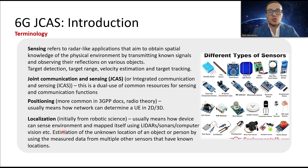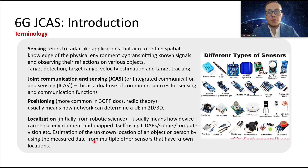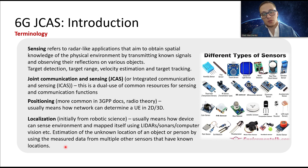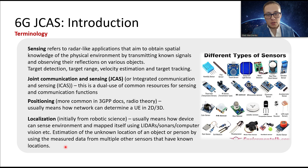There is also localization, which initially comes from robotic science and usually means how a device can sense its environment and map itself using different sensors, including lidars, sonars, computer vision, and so on. It is the estimation of the known location of an object or person using measured data from multiple other sources that have known locations — such as base stations — to define locations and features like target range, physical parameters, coordinates, and so on.